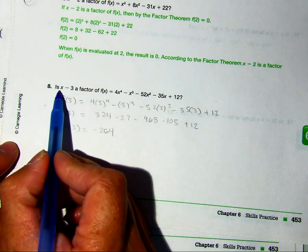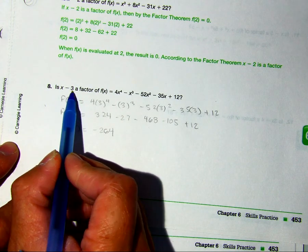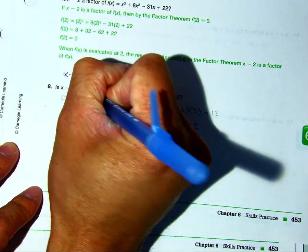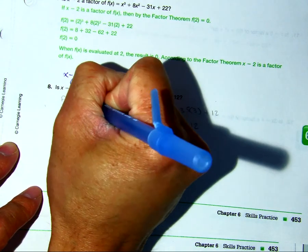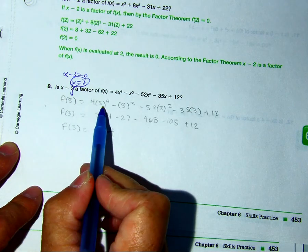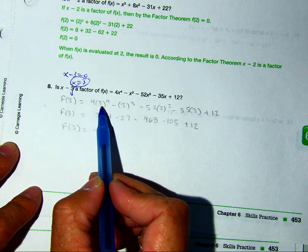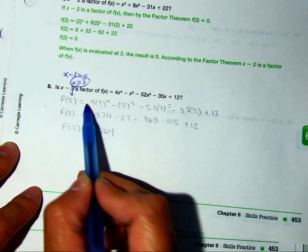So I have x minus 3 as a factor, and this student recognized that if I set it equal to 0, x is equal to 3, and that's what I put into our function. 3 to the 4th power, 9, 81, and 81 times 4 is 324.